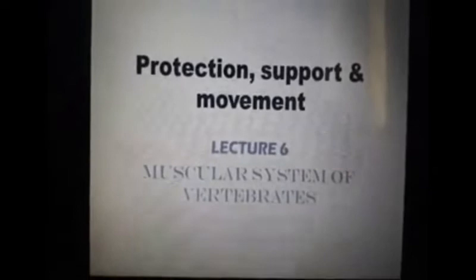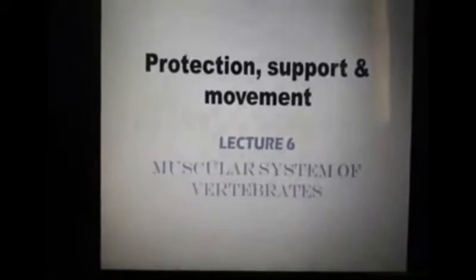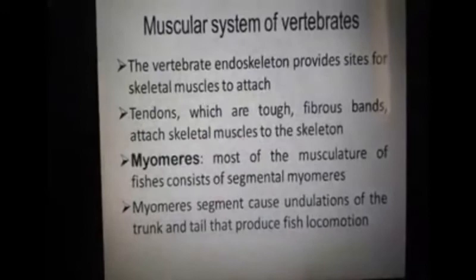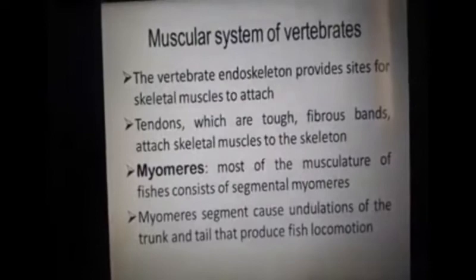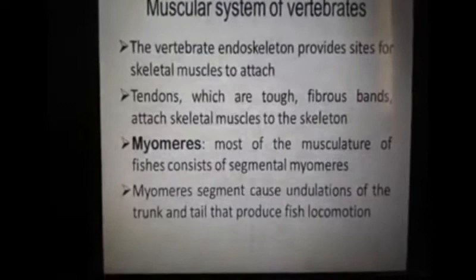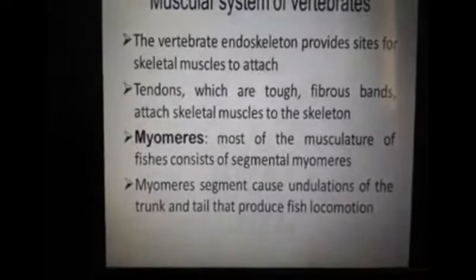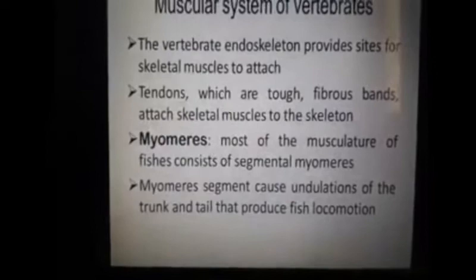In this segment we will cover the muscular system of vertebrates. The vertebrate endoskeleton provides sites for skeletal muscles to attach. Tendons are tough fibrous bands that attach skeletal muscles to the skeleton.